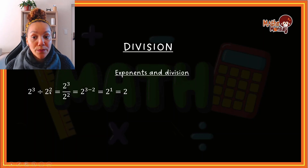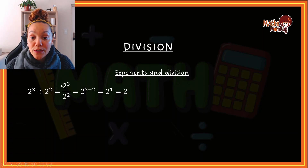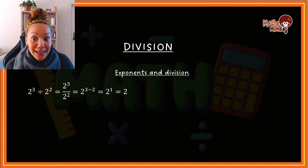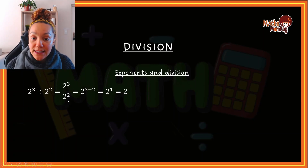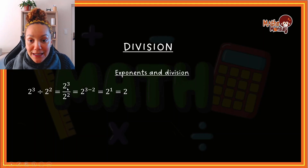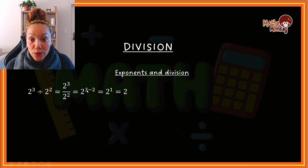For example, two to the power of three divided by two to the power of two. In algebra this gets written as a fraction: two to the power of three over two to the power of two. The base here is two in both cases. In the answer, you write the base and subtract the bottom power from the top: three minus two gives you two to the power of one.